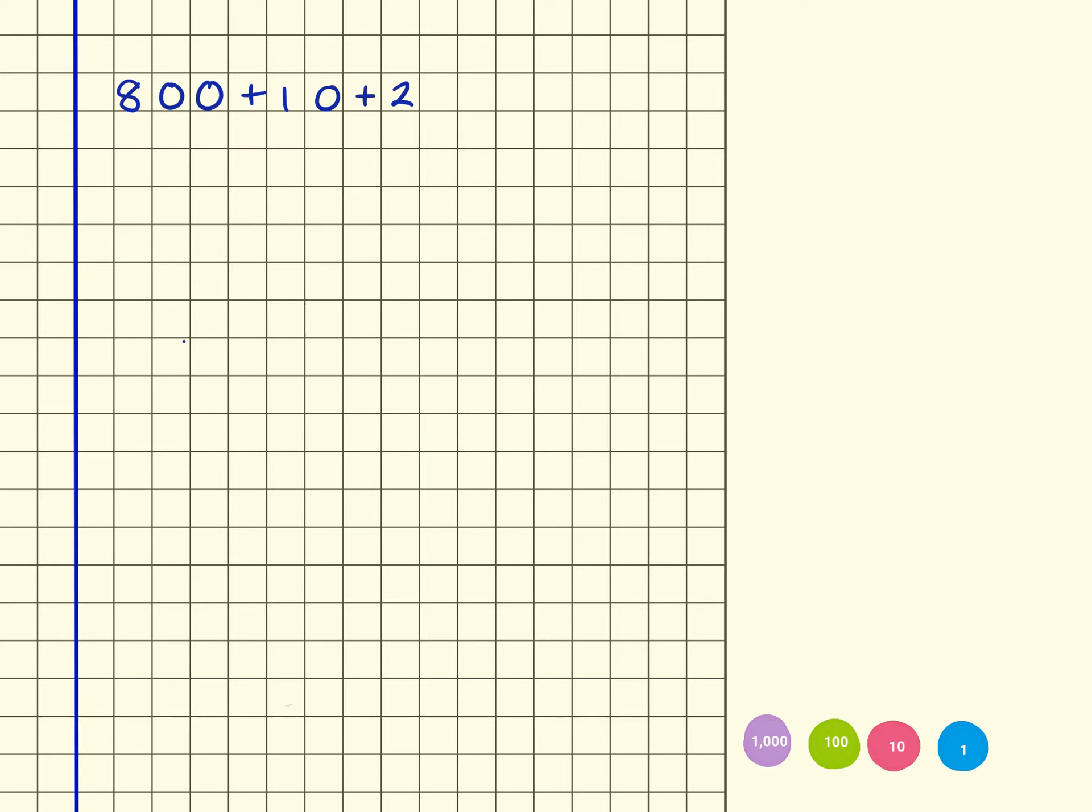So we've got 800 plus 10 plus 2. So if we were to get 800, so 1, 2, 3, 4, 5, 6, 7, 8, 1, 10, and then 2 ones.